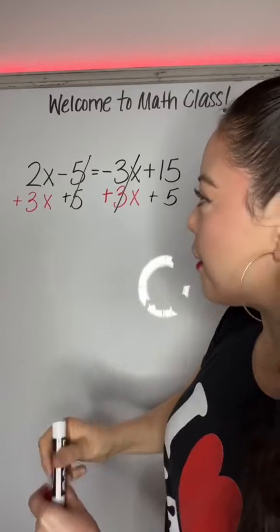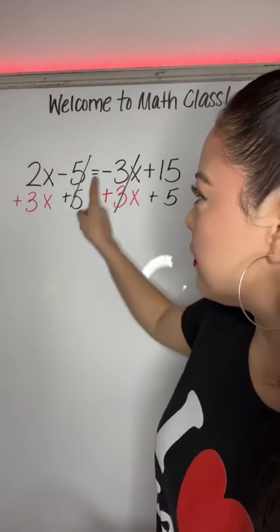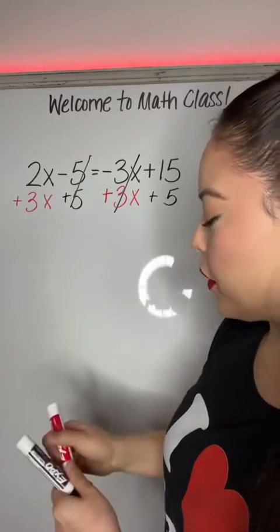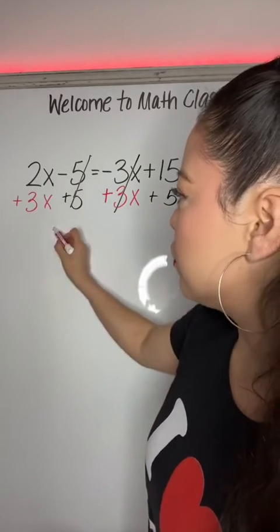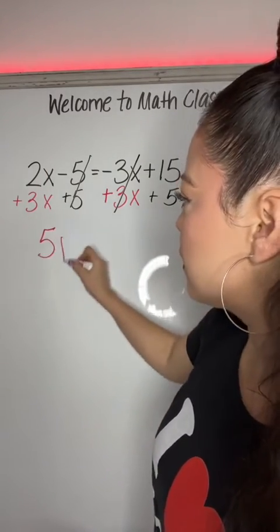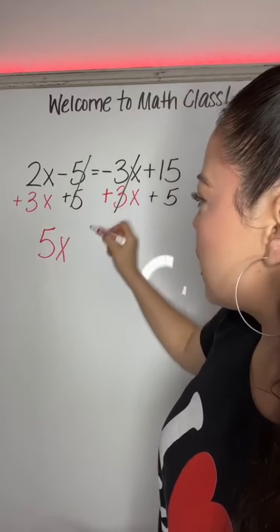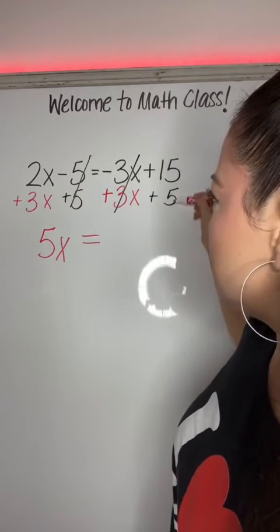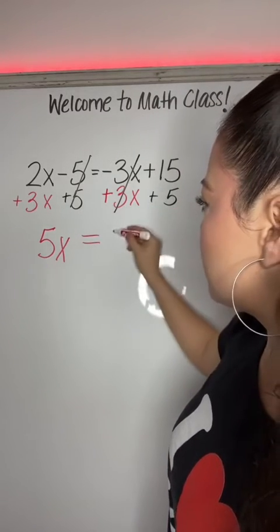Now, on the left side of the equal sign, 2x plus 3x is equal to 5x. Bring down the equal sign and then 15 plus 5 is 20.